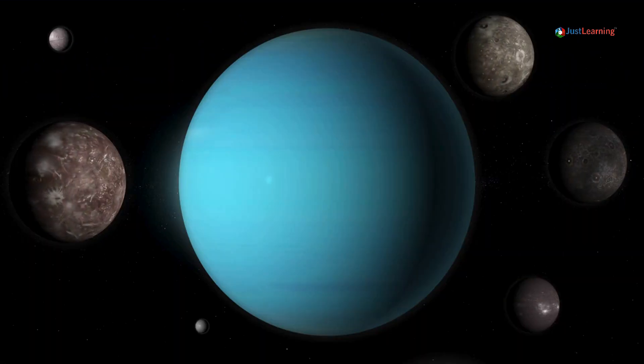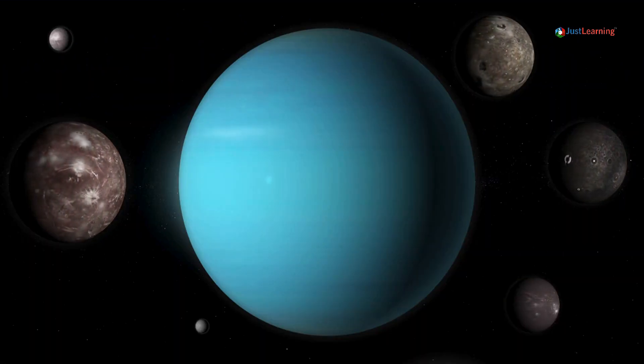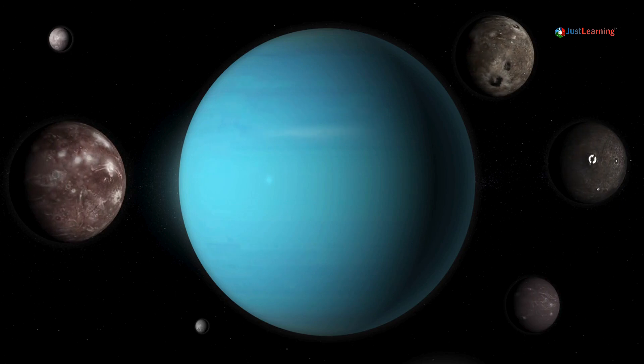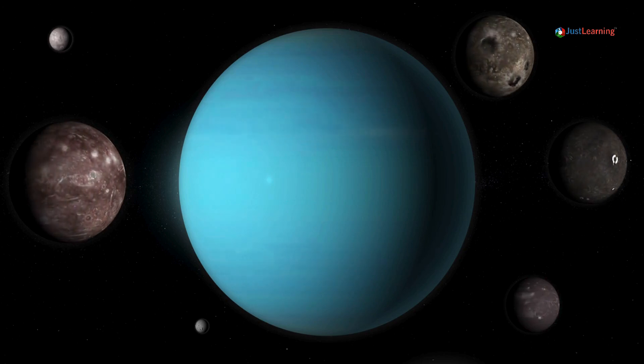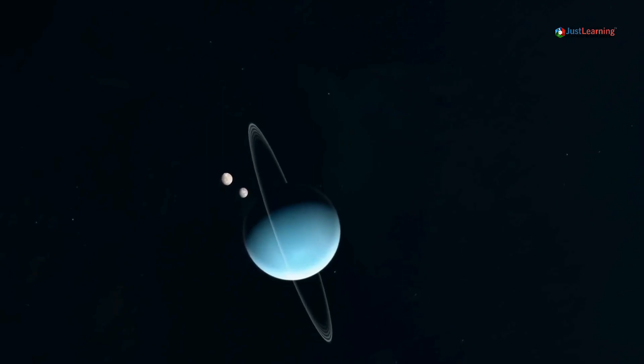The ice giants Uranus and Neptune have 28 and 16 moons, respectively, and seven major moons between them. But these numbers have changed significantly in the past few years.